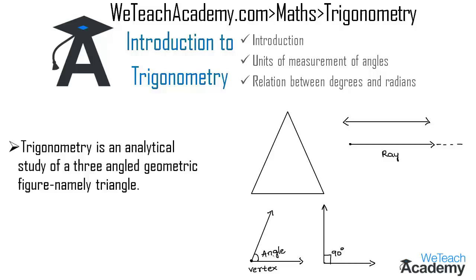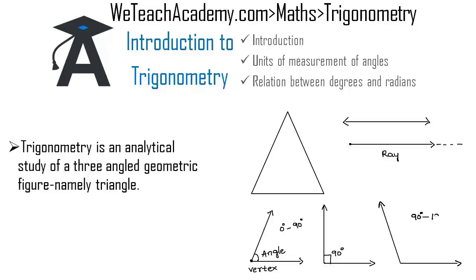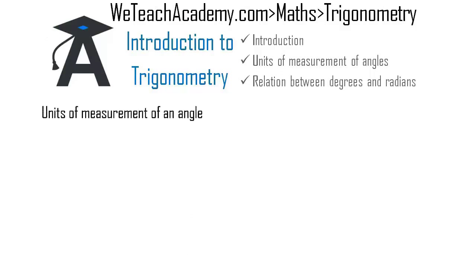Angles are classified into three types. Any angle measuring between 0 degrees and 90 degrees is called an acute angle. Any angle whose measure is exactly 90 degrees is called a right angle. Any angle whose measure exceeds 90 degrees but falls below 180 degrees is called an obtuse angle. When a rotating ray completes one full circle, the angle made is equal to 360 degrees, which is a complete angle.